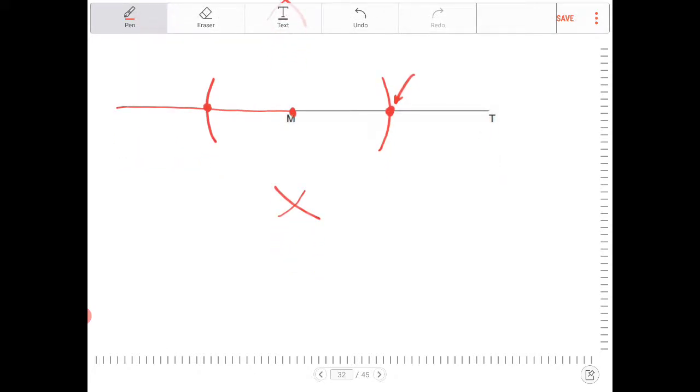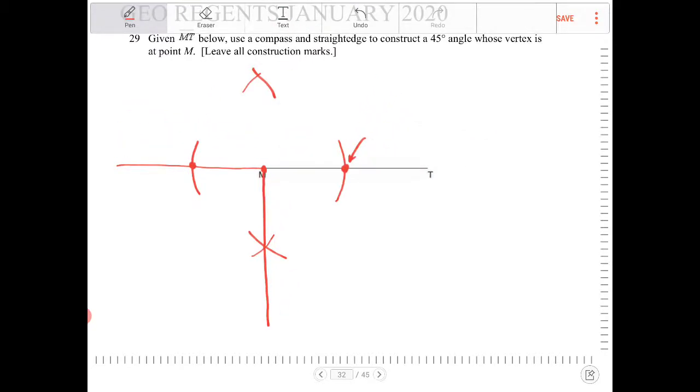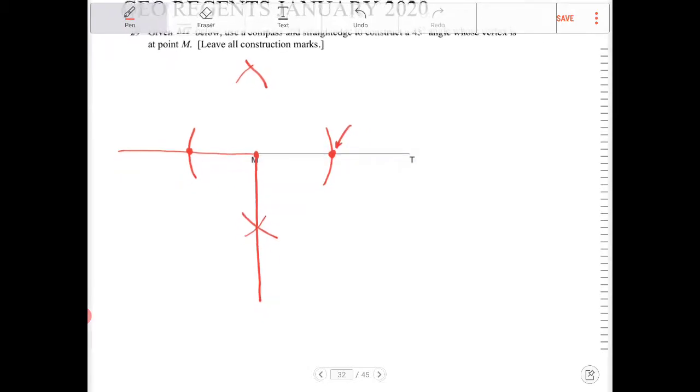So I'm just going to ask you to take your straight edge. You're going to connect point M to this point here, and I'm just going to extend it. And then now what we have is a 90 degree angle. And from this point, what are we going to do? We're going to try and bisect this. Now how are we going to do that?